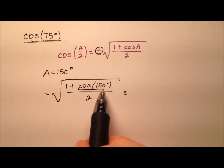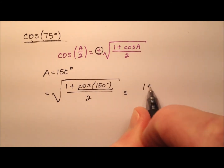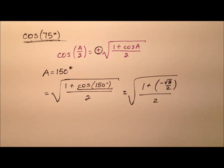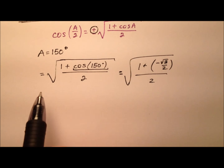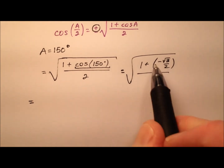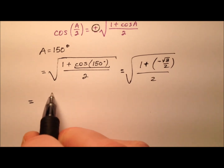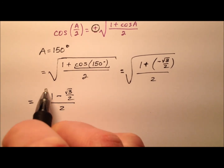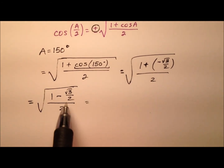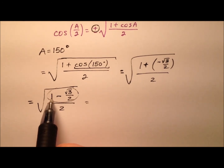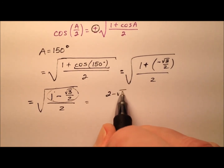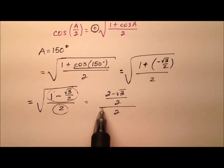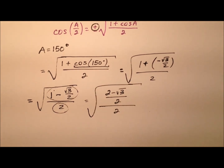The cosine of 150 degrees is negative radical 3 over 2. So now we have plus a negative, which means it's going to be 1 minus the square root of 3 over 2, all over 2. We can get common denominators up here — this 1 will become 2 over 2 — so we'll have 2 minus the square root of 3 over 2, all over the 2 in the denominator.